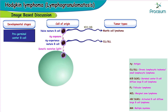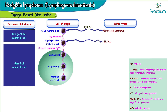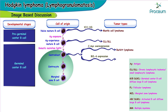When this cell undergoes somatic mutation, it forms a centroblast followed by a centrocyte and then a marginal zone B-cell. At any stage of development in the germinal center, if the centroblast undergoes c-Myc overexpression, it forms Burkitt lymphoma. If the centroblast undergoes BCL-6 expression, it forms diffuse large B-cell lymphoma. If the centrocyte undergoes a t(14;18) translocation, it forms follicular lymphoma.